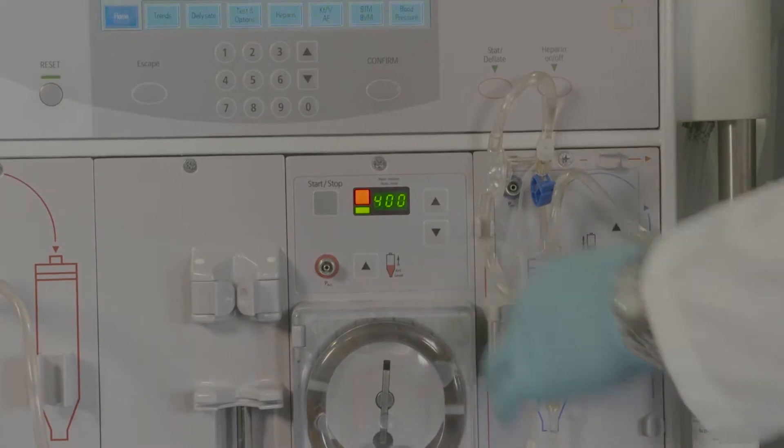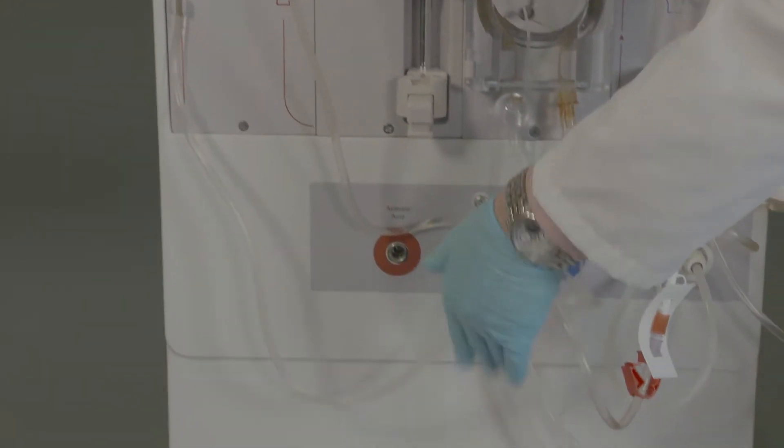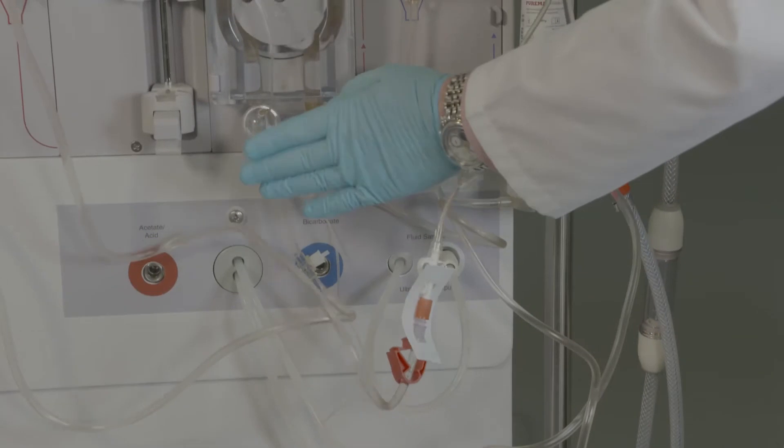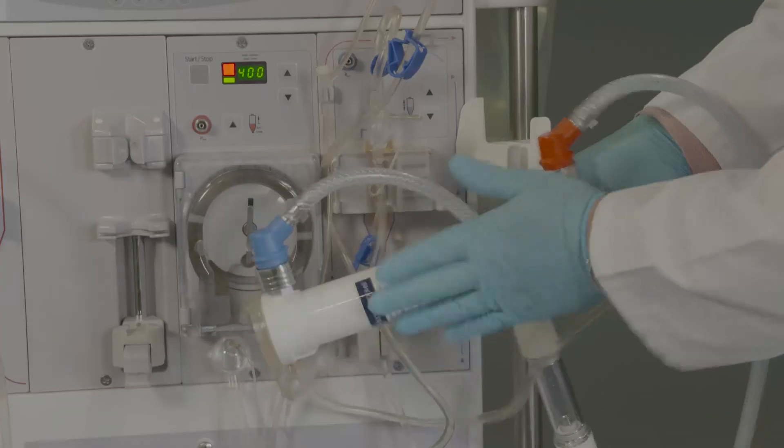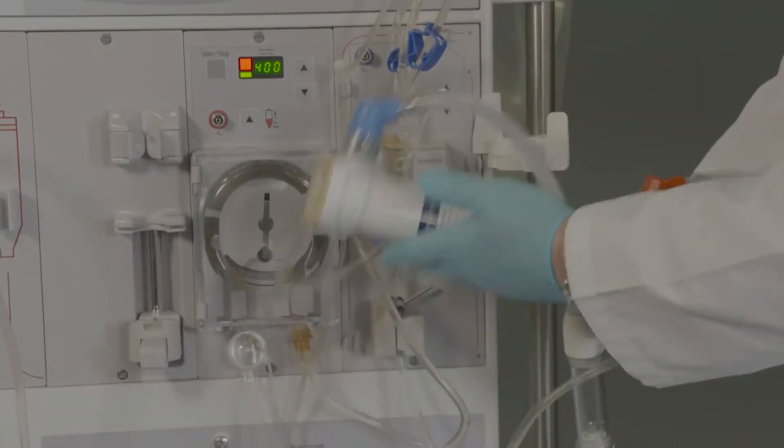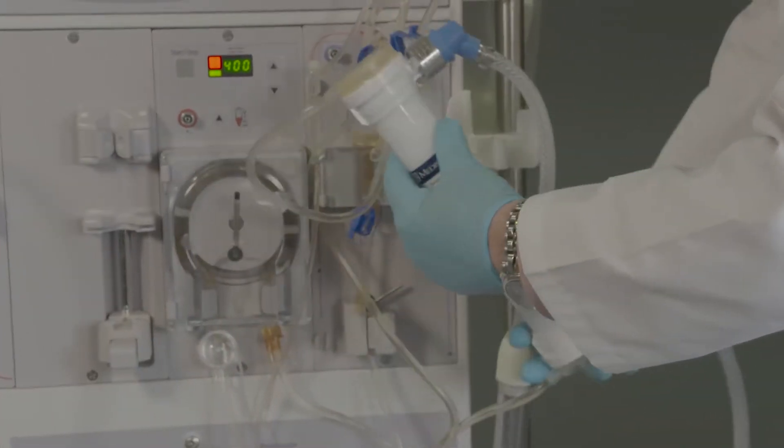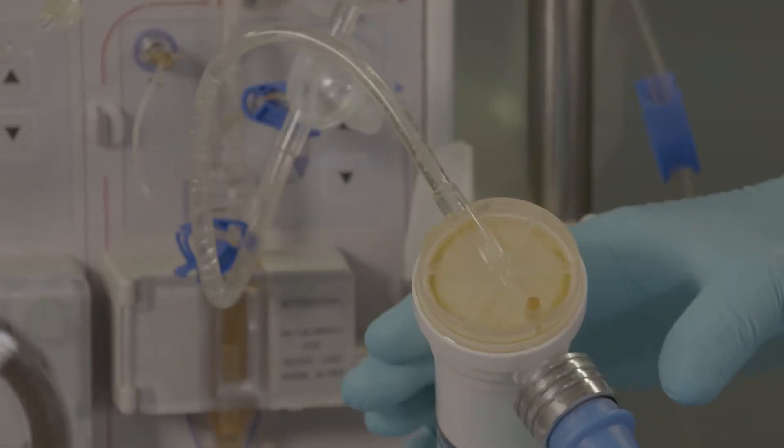In order to dislodge air bubbles in the circuit, tap the arterial line and arterial pod two to three times during the recirculation mode. Tilt the venous port of the dialyzer to approximately the 10 o'clock position with the dialysate port tilted upwards.